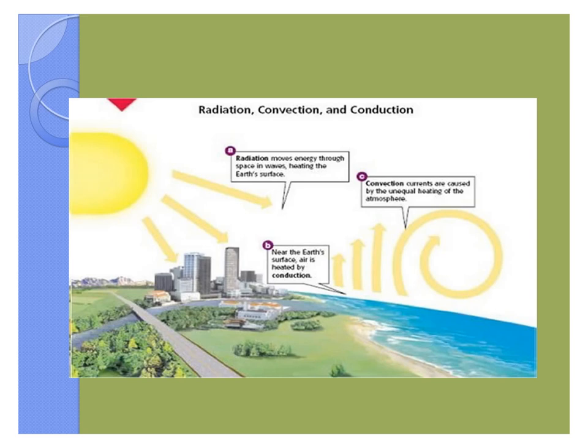Here's a picture of all three of these processes going on. In the first part, radiation moves energy through space from the sun to Earth in light waves, and in turn it heats the Earth's surface. Letter B says that near the Earth's surface, the atmosphere is heated by conduction — there's contact between the gas and the surface of the Earth. And then as a result, convection currents are caused by unequal heating of the atmosphere. We'll get into all the details in the next few slides.